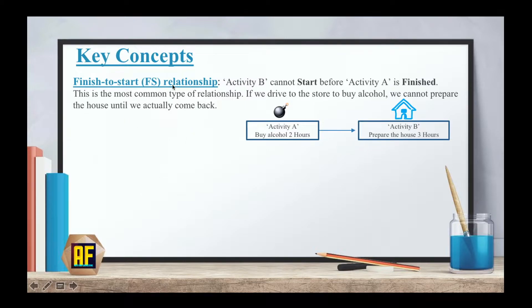Finish to start relationship. Activity B cannot start before activity A is finished. This is the most common type of relationship. Just think about it. If we drive to the store to buy alcohol, we cannot prepare the house until we actually come back.